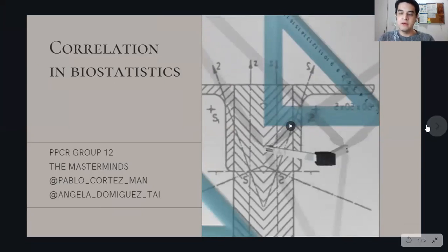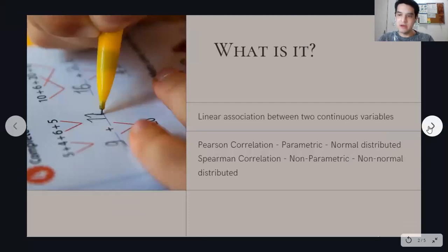So what is a correlation? In simple words, it's a linear association between two continuous variables. For us to conduct a correlation test, the variables must be continuous.